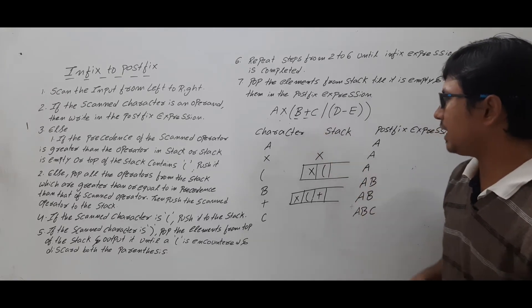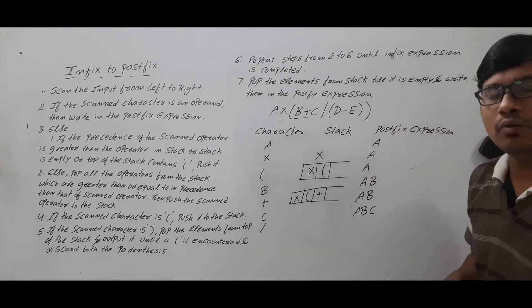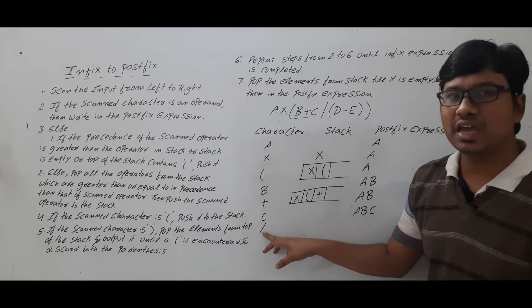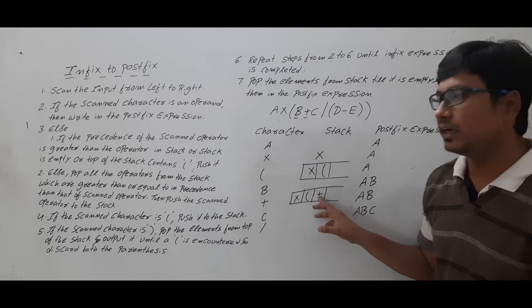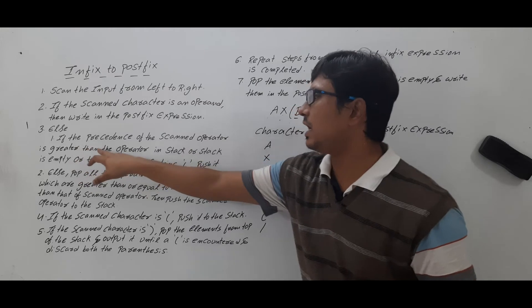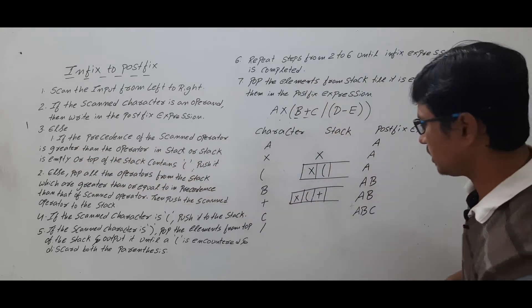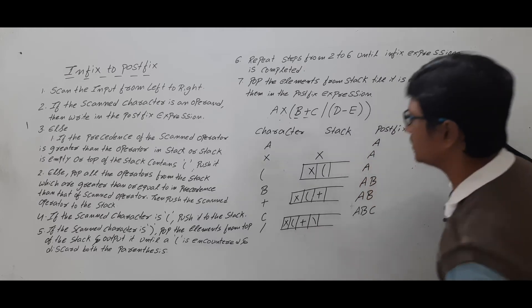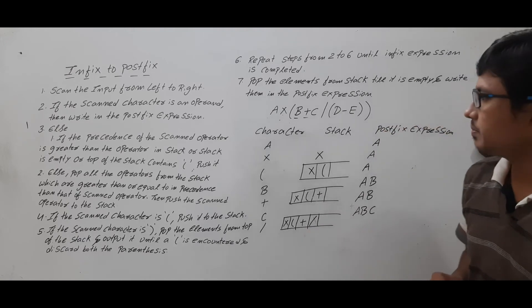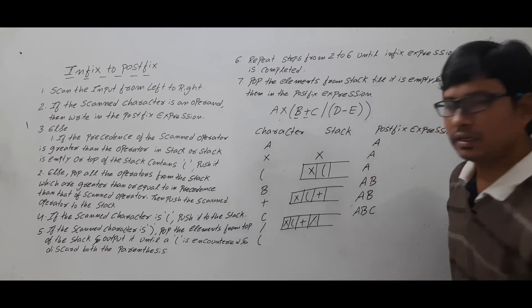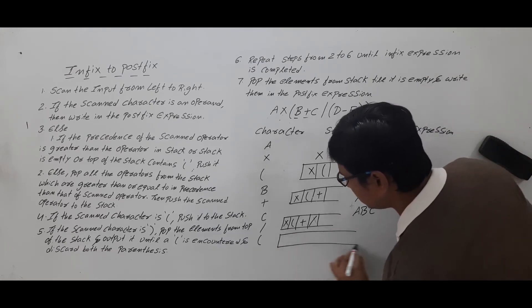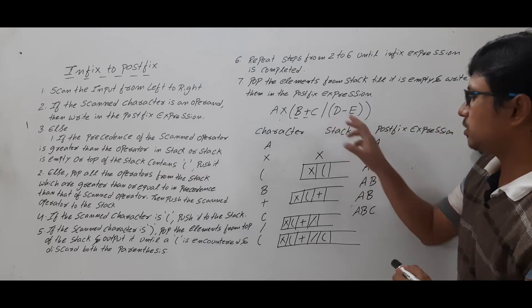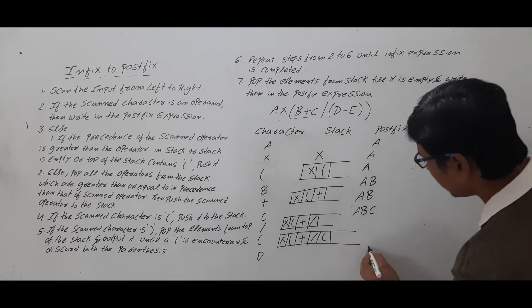Next we scan division. The top of the stack is plus, and division has higher priority than plus, so we push division. The stack now has: multiplication, open parenthesis, plus, division. Then we scan another open parenthesis and push it. The stack now has: multiplication, open parenthesis, plus, division, open parenthesis.